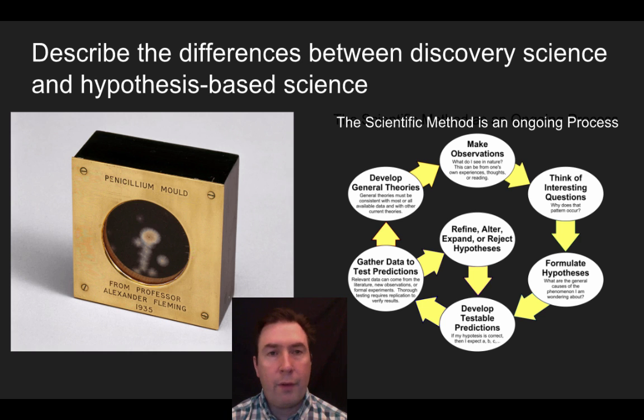Over here on the far left, I also have a diagram of penicillin or penicillium mold, which led to the discovery of penicillin. And so in this instance, this was a discovery not based off of a planned experiment, but Alexander Fleming discovered that there was mold growing on a petri dish and it was inhibiting the growth of bacteria near that location. And so this was a discovery.